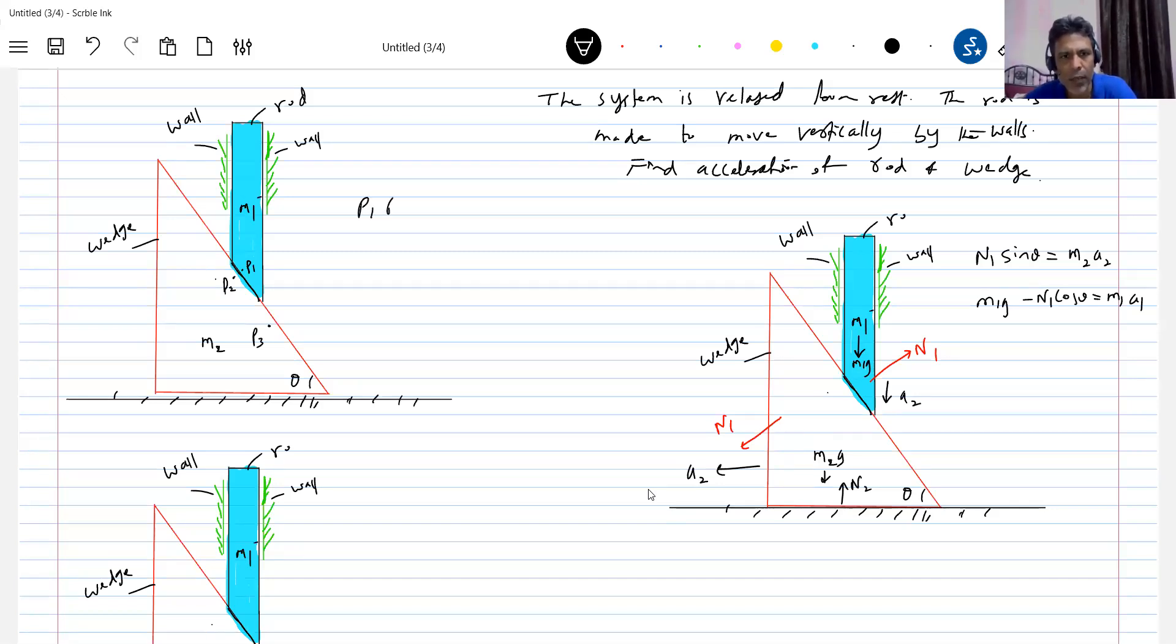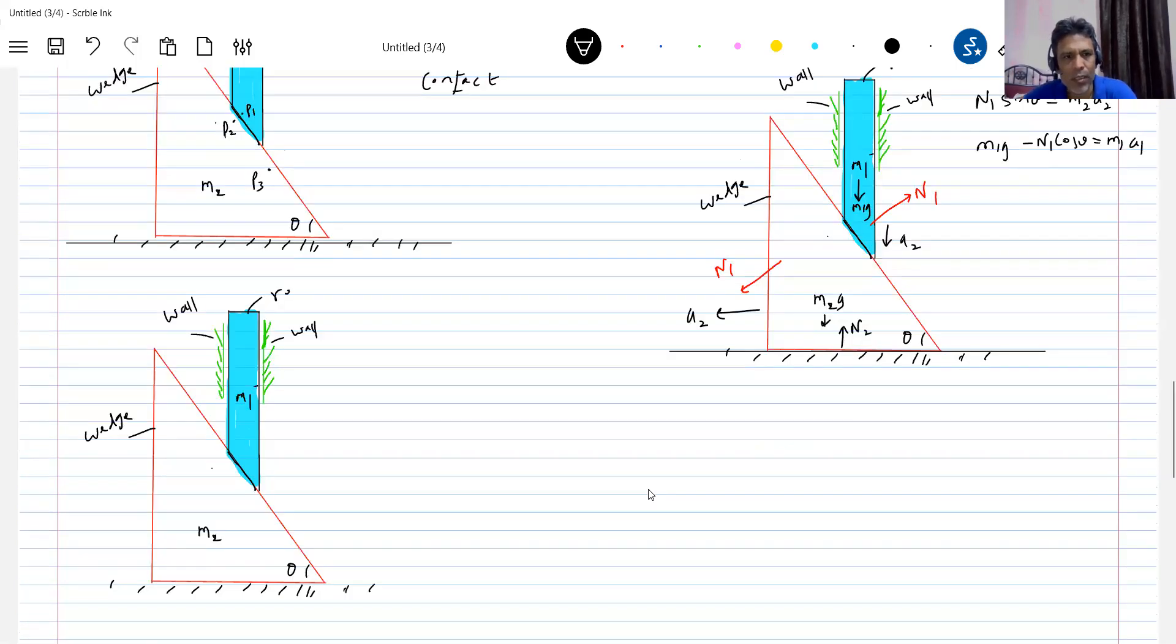Okay, now let's come for the second diagram. How the wedge... wedge will move towards left. The wedge has shifted towards the... where? The rod will be there only.